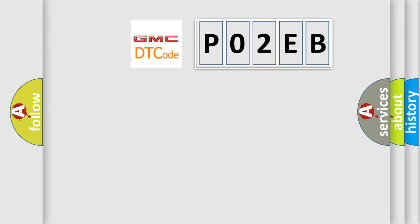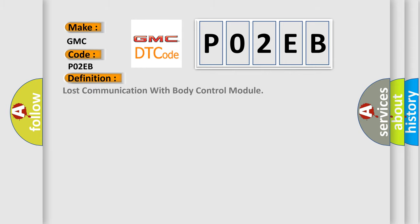So, what does the diagnostic trouble code P02EB interpret specifically for GMC car manufacturers? The basic definition is: Lost communication with body control module.